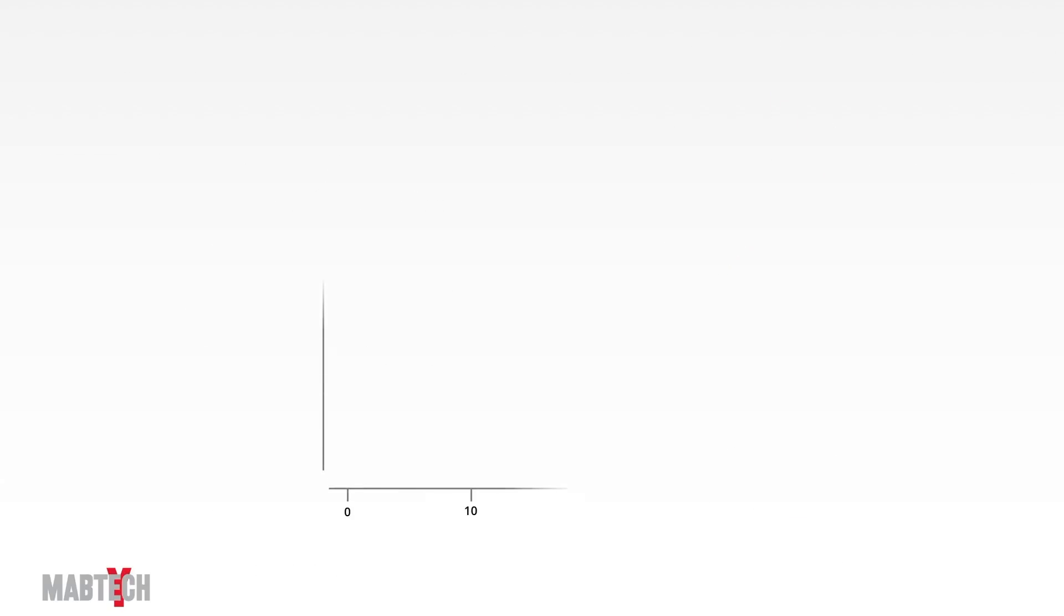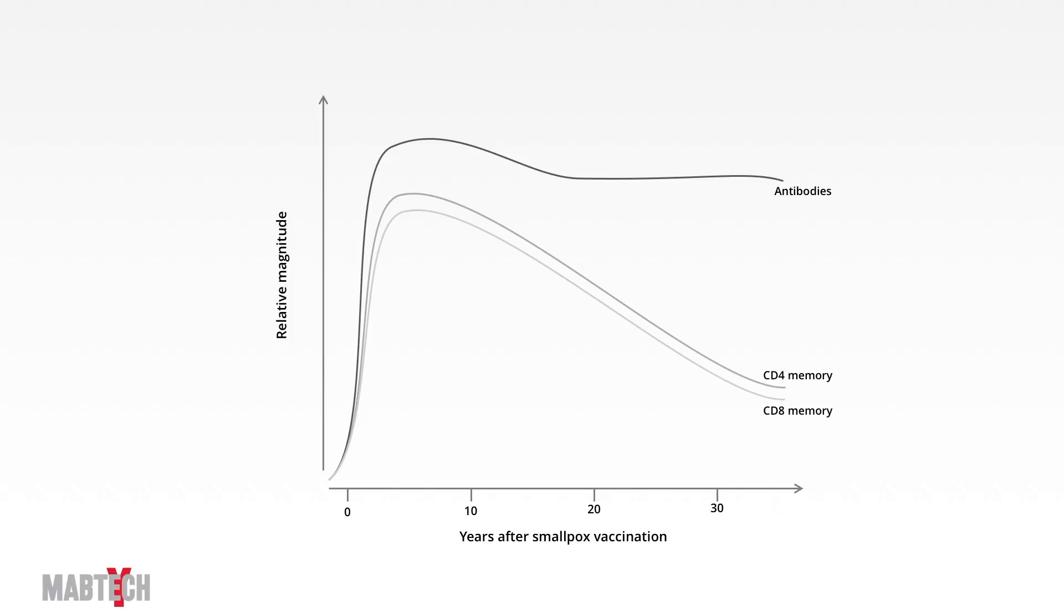Finally, immunological memory can be very long-lived. Since smallpox has been eradicated, recall responses can be considered true memory of vaccination in the absence of reinfection. In this example, antibody levels show no significant decline, and T cell memory shows a half-life of 15 years. There have even been reports of smallpox responses still 75 years after vaccination.